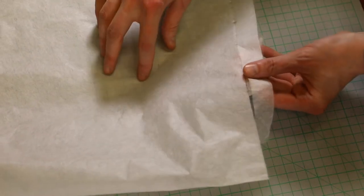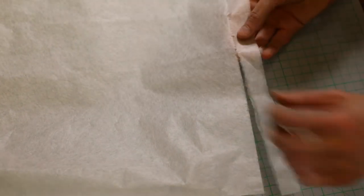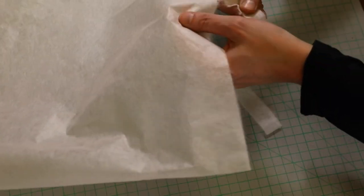To cut the Japanese paper, we actually score it and then tear it into long strips. The tearing part is important to get a nice ragged edge, that way it will blend into the paper that it's applied to.